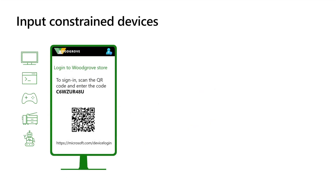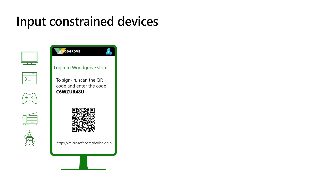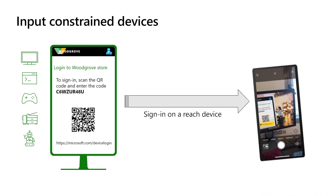There are also applications for input-constrained devices. On these devices or apps, the screen or monitor is limited to text only — for example, gaming consoles, printers, or command lines. Due to the input constraints, authentication is done on another reachable device like the user's mobile phone.